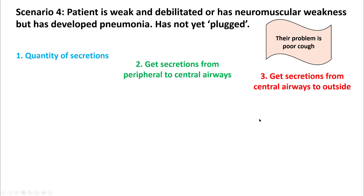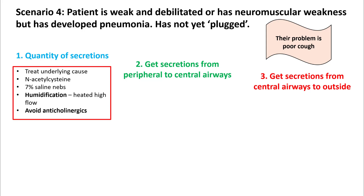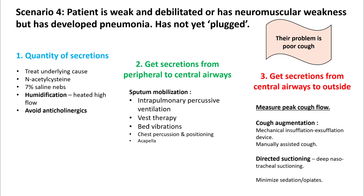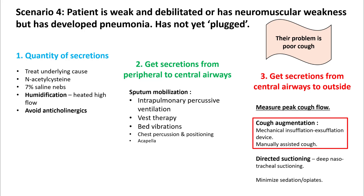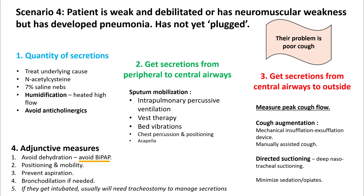If these patients develop pneumonia, their mucociliary escalator is compromised. They are at high risk of forming mucus plugs, and the underlying problem is a very poor cough reflex. Use your three techniques: maintain the quantity and quality of secretions with 7% saline and humidification, and try to avoid drying up secretions. Get secretions from peripheral to central airways using chest percussion, positioning, and Acapella — if the patient is still unable to handle, use VEST therapy. Stimulate cough using directed suctioning. Use mechanical insufflation-exsufflation device and manually assisted cough. Note that BiPAP can be a double-edged sword — while it helps with atelectasis, it can compromise secretion clearance. These patients are at high risk of intubation, but using these simple methods you should be able to manage many of them.